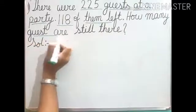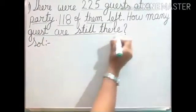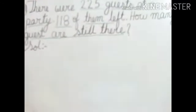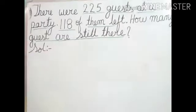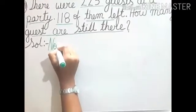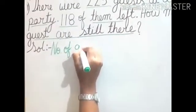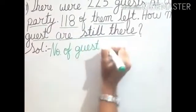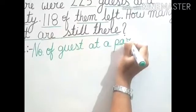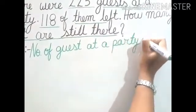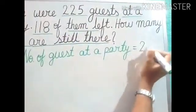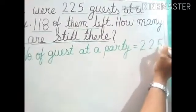Here we have to find out the number of guests still there. Tell me the first statement. The first statement will be: number of guests at a party. So let us write — number of guests at a party equals how much? It is given 225, so we will write 225.